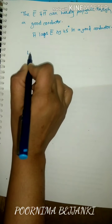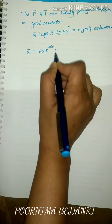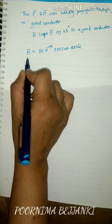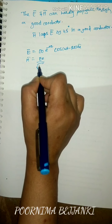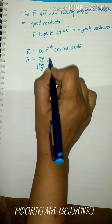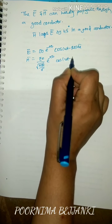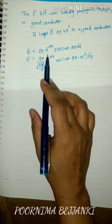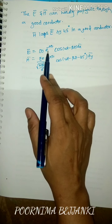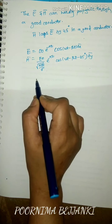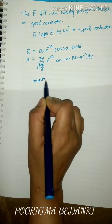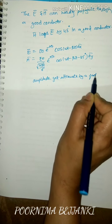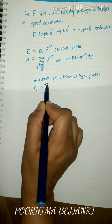The electric field intensity inside a good conductor is E-bar equals E_naught e^(−alpha z) cos(omega t − beta z) a_x-bar, and H-bar equals (E_naught / root(omega mu over sigma)) e^(−alpha z) cos(omega t − beta z − 45°) a_y-bar. The amplitude of both fields exponentially decreases by a factor of e^(−alpha z), so the amplitude gets attenuated.